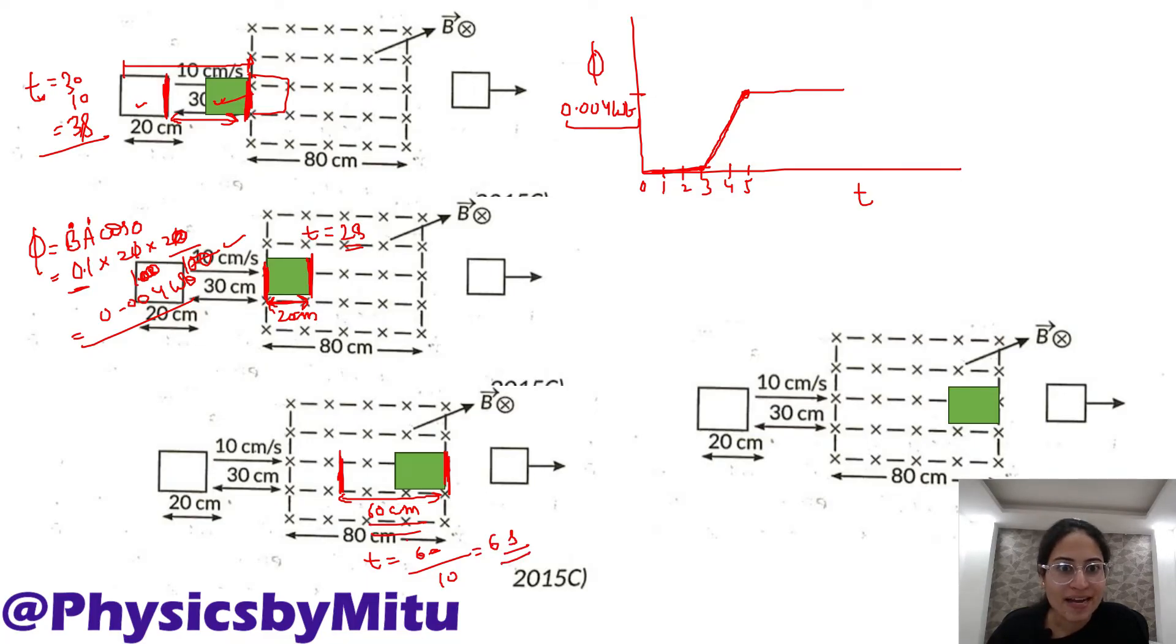So till 5 to 6, 5 seconds ke baad 6 seconds, till 11 seconds there is no change in flux. Till 11 seconds there is no change in the flux. Now after 11 seconds, what happens?